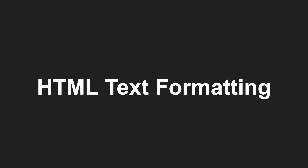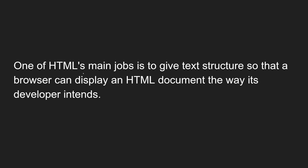In this video we will learn about another concept: HTML text formatting. Normally we know that HTML is intended for writing text data, text documents. So how to format this, how the formatting will be done in HTML — let's try to see in this video. One of HTML's main jobs is to give text structure so that a browser can display an HTML document the way its developer intends. So the structure of the text should be in such a way that how the developer intends to show that in the web browser, and that structure needs to be provided by HTML.